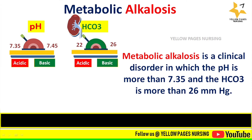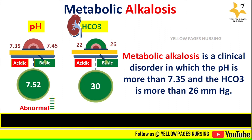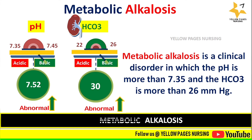Metabolic alkalosis is a clinical disorder in which the pH is more than 7.45 and the bicarbonate is more than 26 mEq/L. The normal value of pH ranges between 7.35 and 7.45, and the normal value of bicarbonate ranges between 22 to 26.